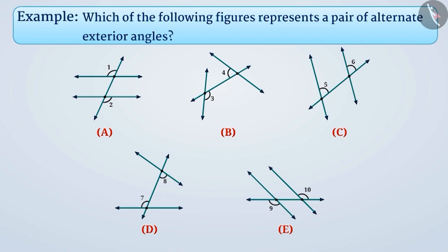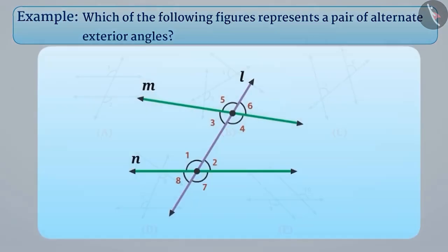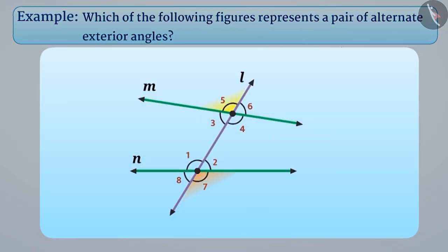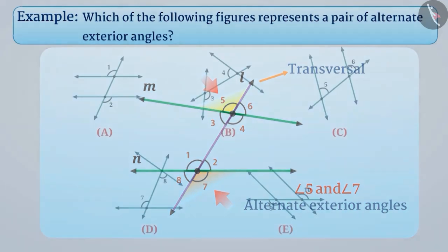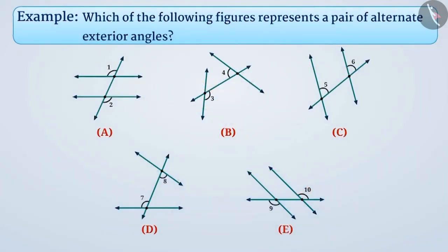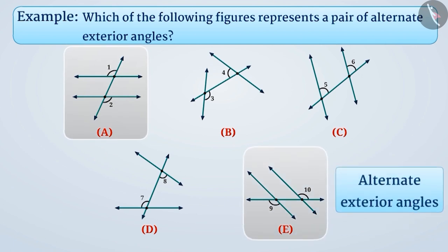You might have learned that two angles having a different vertex and are on the opposite sides of the transversal are called alternate exterior angles. In the given figures, A and E have alternate exterior angles.